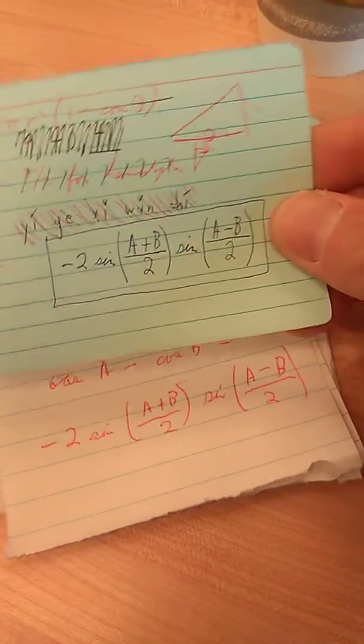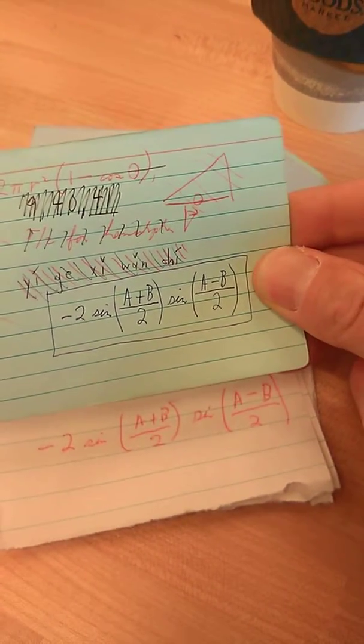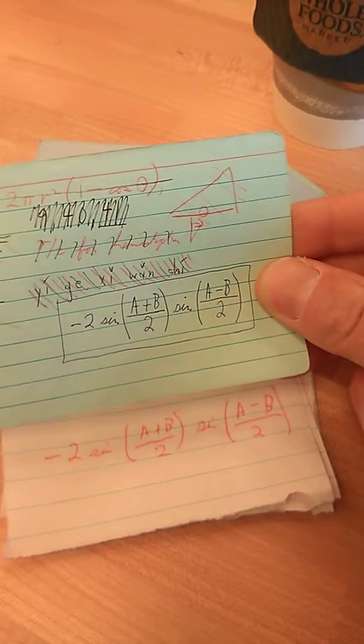So let's see. Negative 2 sine A plus B divided by 2 times sine A minus B also over 2.